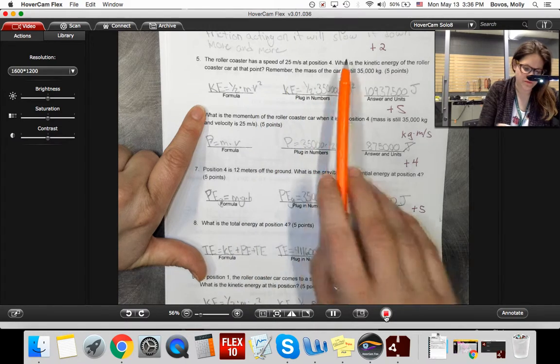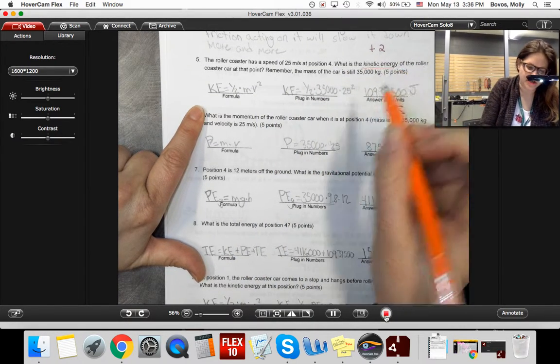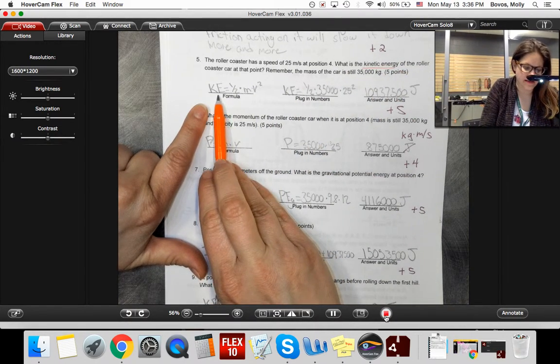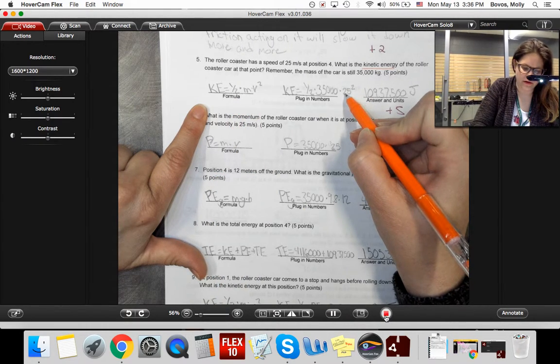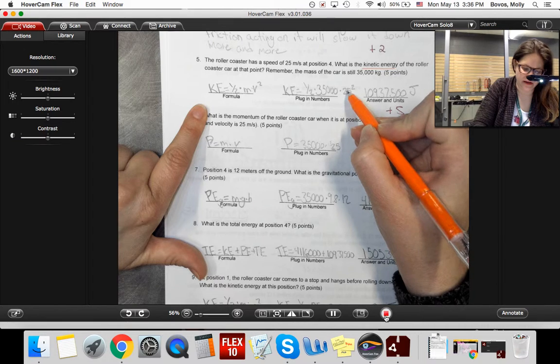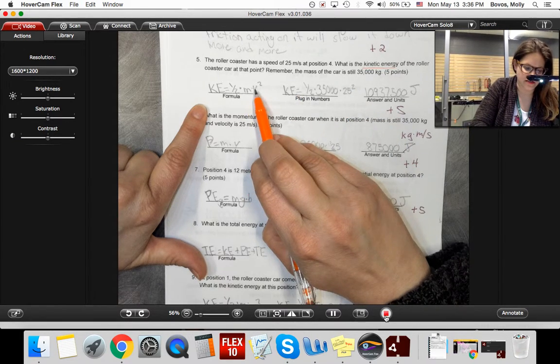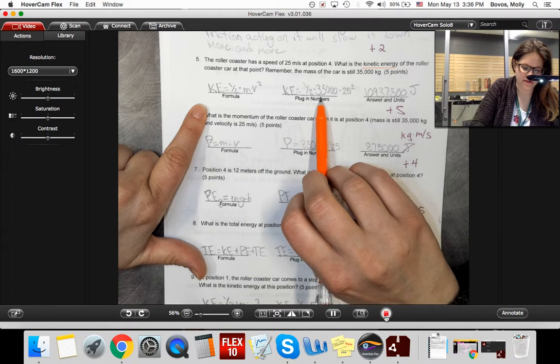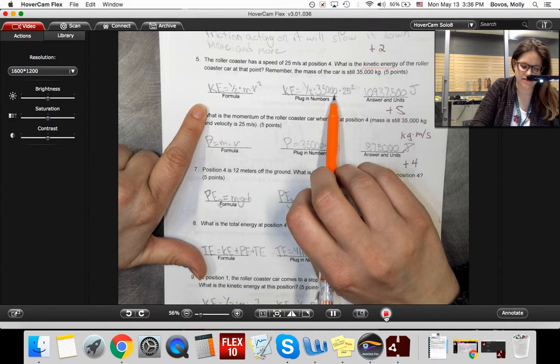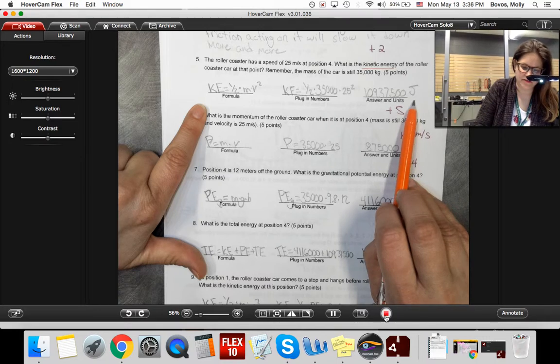If we're looking for kinetic energy, then we want to use KE equals 1/2 mv squared, being careful to make sure that you're squaring the 25. The 25 is your velocity, or your v. And your mass, or your m, is still 35,000 kilograms. And units for energy are, of course, joules.